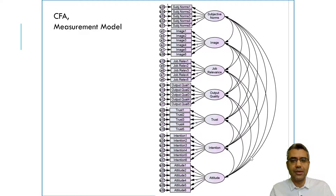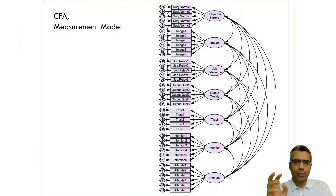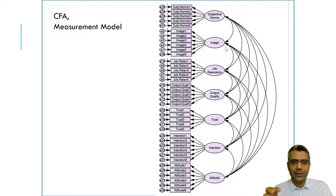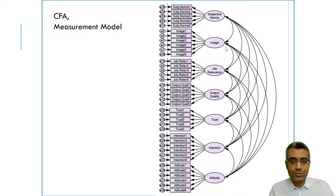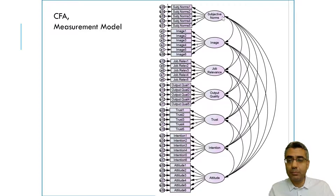You do not see any path from any of these constructs to the other one — all have been connected using covariances. This means we just say that these are some constructs and we want to see whether they have been measured well — whether the hypothesized model matches the observed model. When the model fit is good, we will test the relationships between the constructs.